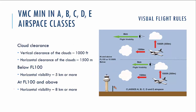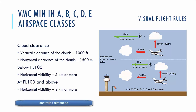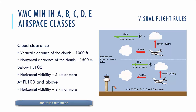Let's check briefly our VMC minimums in some airspace classes. We will talk thoroughly about airspace classes later. For airspace classes A to E, the meteorological conditions minimums are: vertical clearance of clouds 1000 feet, horizontal clearance of clouds 1500 meters. Below flight level 100, horizontal visibility should be at least 5 kilometers. Above flight level 100, flight visibility must be 8 kilometers or more.